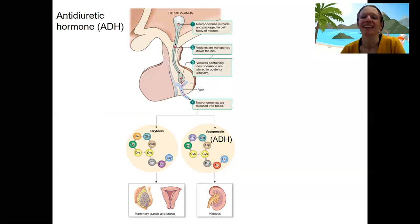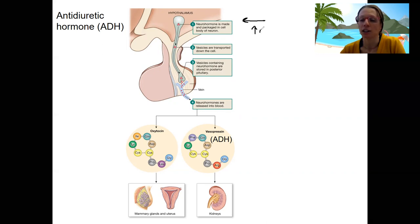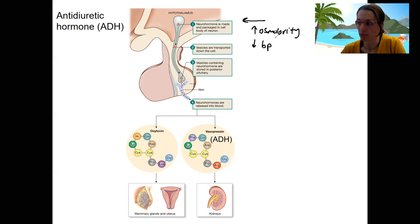We also saw this in the endocrine system. The hypothalamic posterior pituitary releases these neurohormones, one of which is vasopressin, or ADH, or antidiuretic hormone, which is going to act on the kidneys to be antidiuretic. The signal for this is either high osmolarity or low blood pressure, targeting different types of mechanoreceptors — either osmoreceptors or baroreceptors.